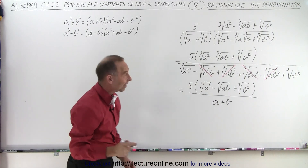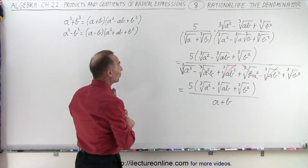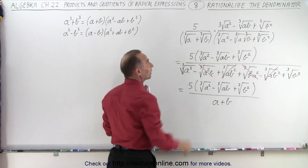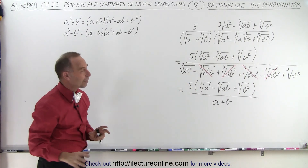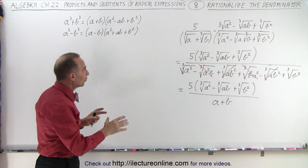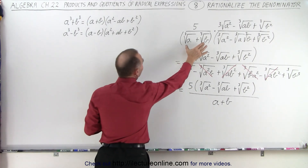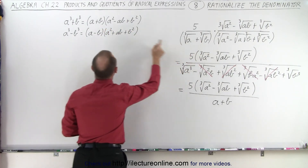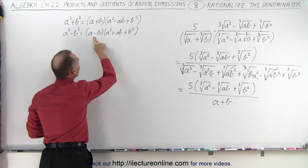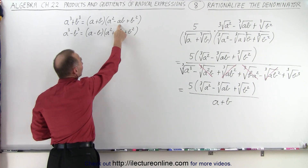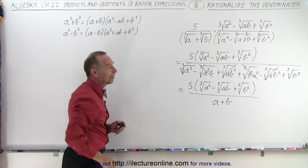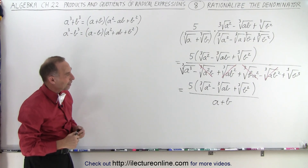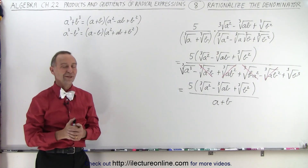And that's how we rationalize the denominator when we're dealing with cube roots rather than square roots. It's a little more complicated, but if we recognize that the denominator matches the sum or difference of cubes pattern, we multiply by the appropriate conjugate — either the plus or minus form — to eliminate the radical in the denominator. And that is how it's done.